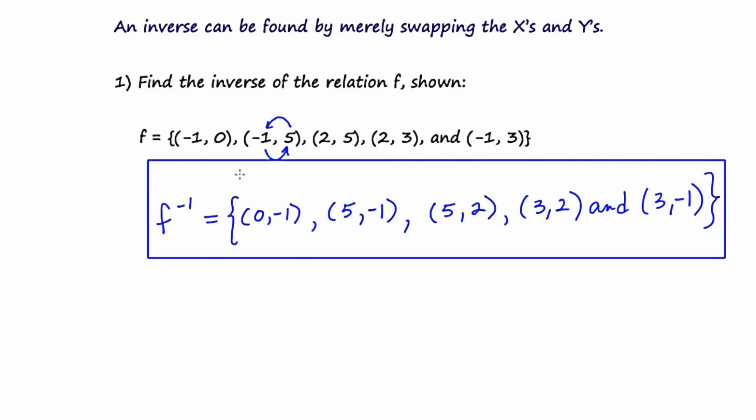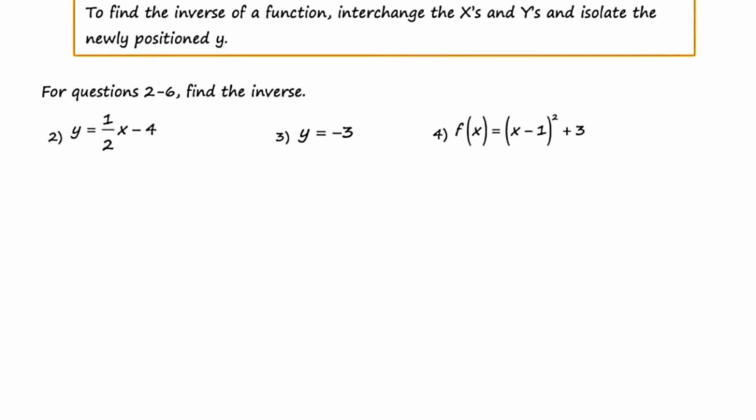It's also worth noting that this notation here is read as "f inverse." Don't read this as "f to the negative 1," although it looks like that — in this context, it's read as f inverse. In the next five examples, we're going to be given a function and asked to find its inverse. To do this, we're going to interchange the x's and y's and then isolate the newly positioned y.